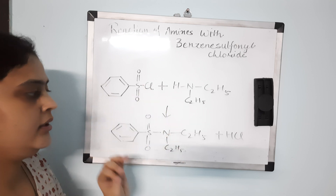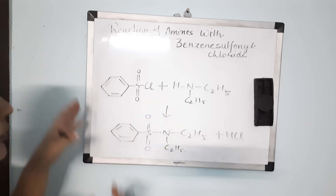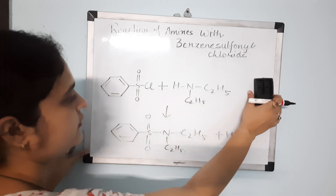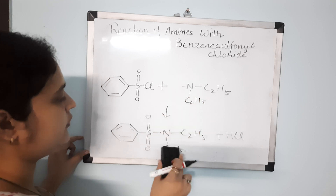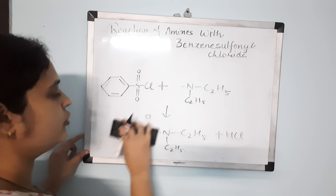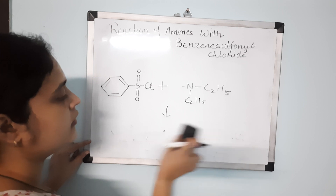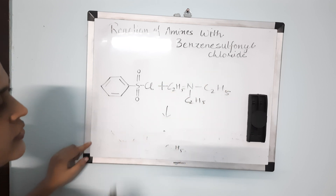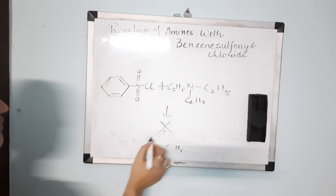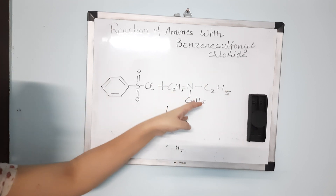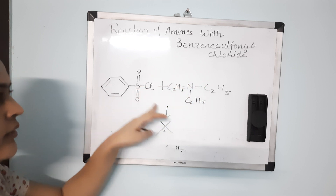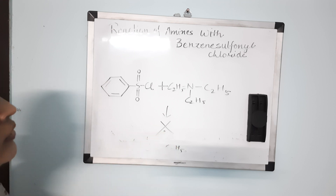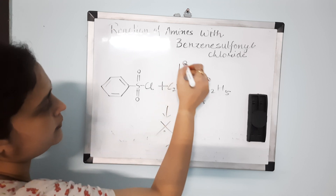Now, when benzene sulfonyl chloride reacts with a tertiary amine — for example, one where nitrogen has three C2H5 groups — there will be no reaction. This is because there is no hydrogen atom attached to nitrogen, so HCl cannot be removed and therefore no reaction occurs.